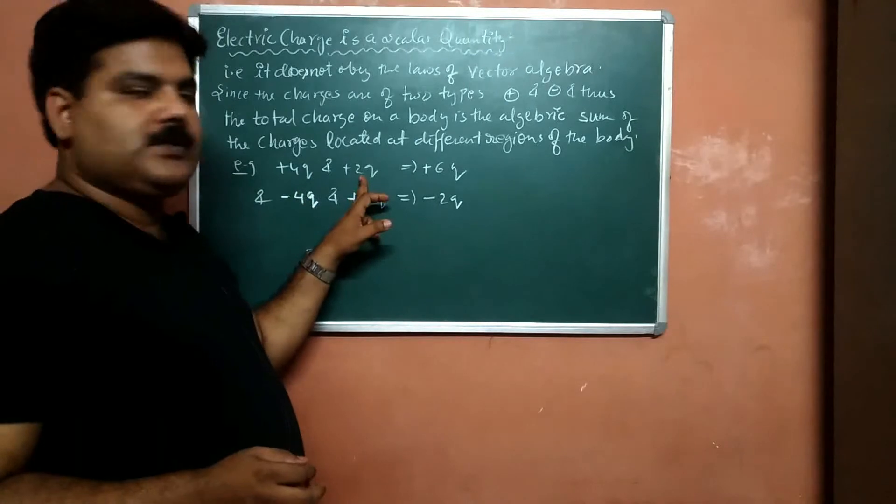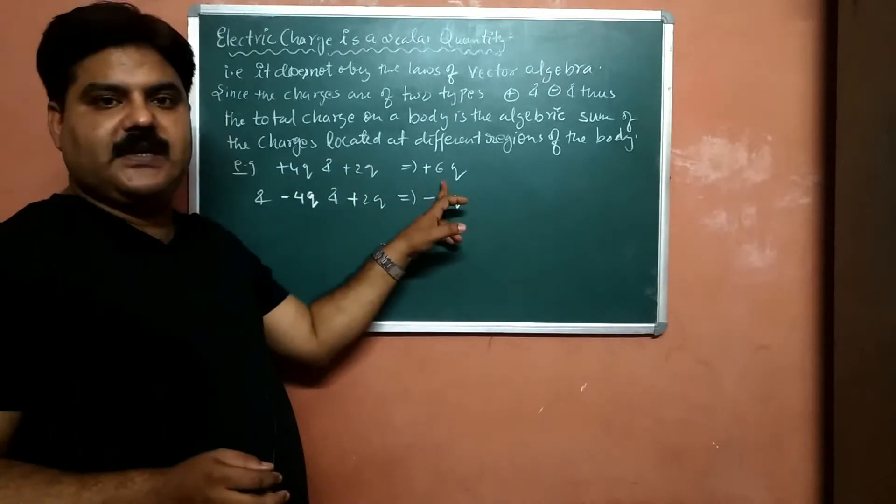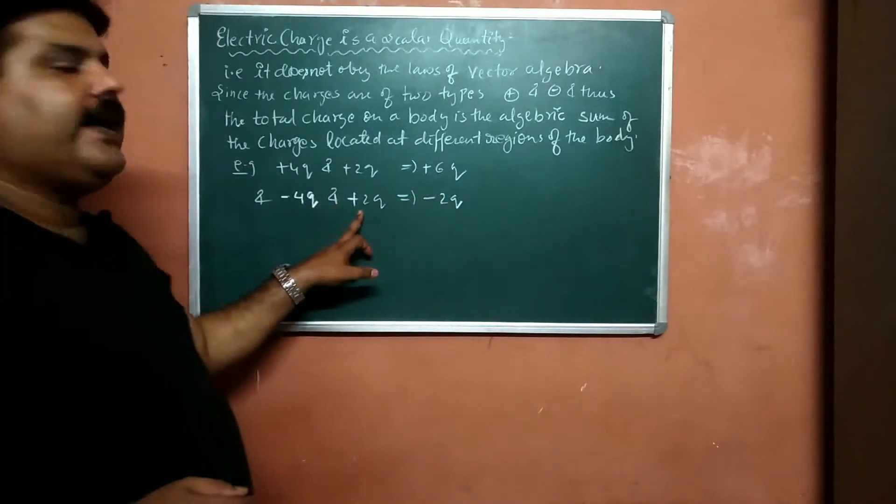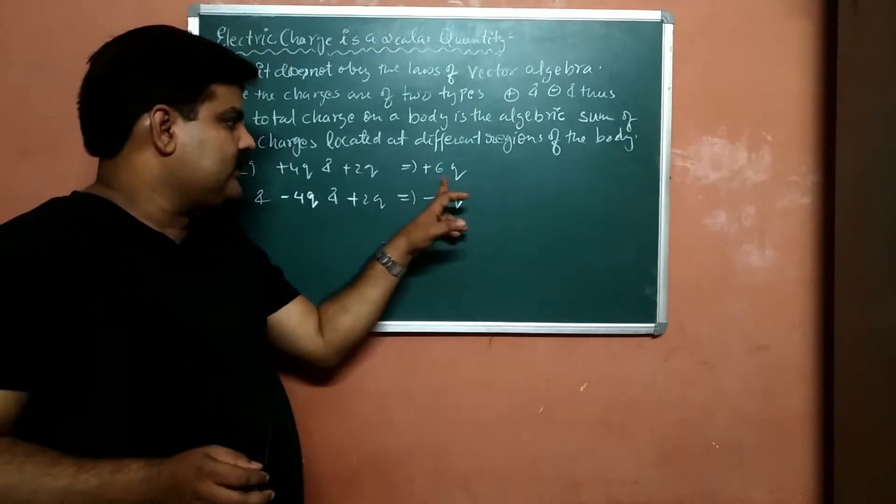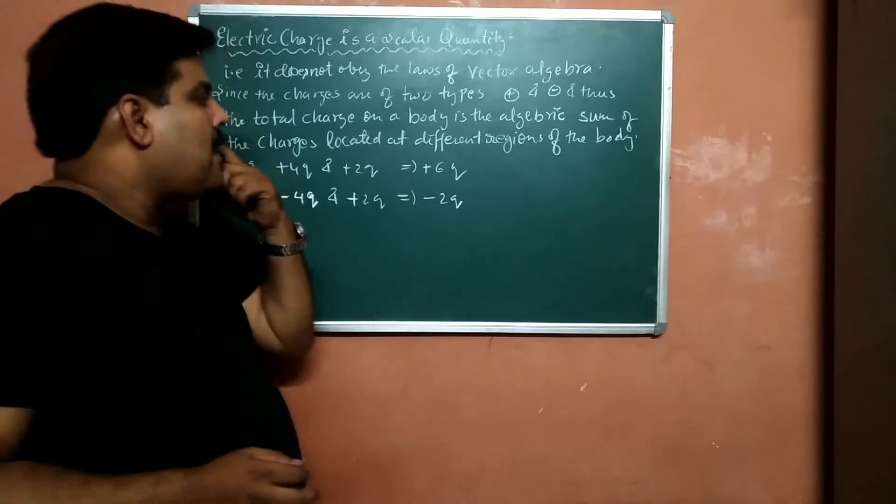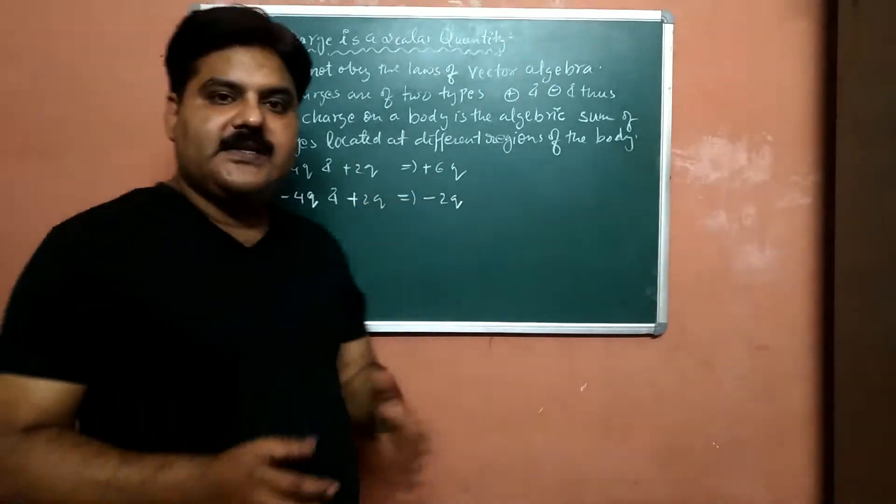Here is plus 4q plus 2, the result is plus 6. Here is minus 4, here is plus 2, the result is minus 2. So this is only the magnitude, and that's why it is a scalar quantity.